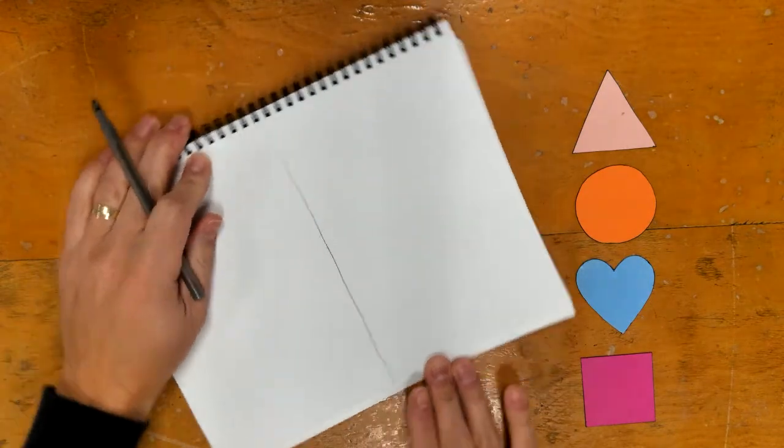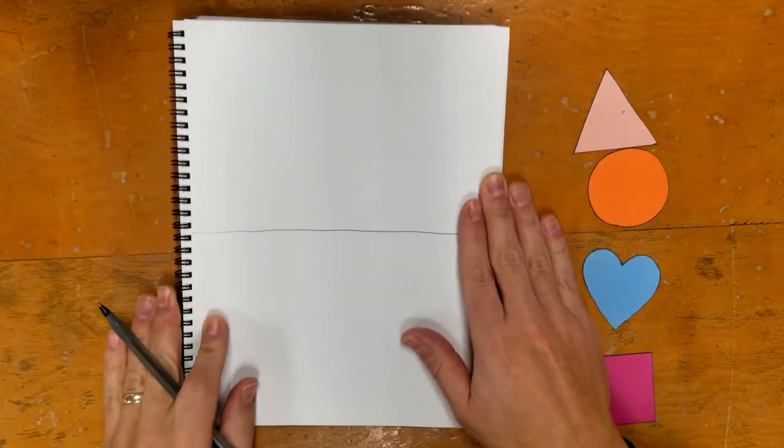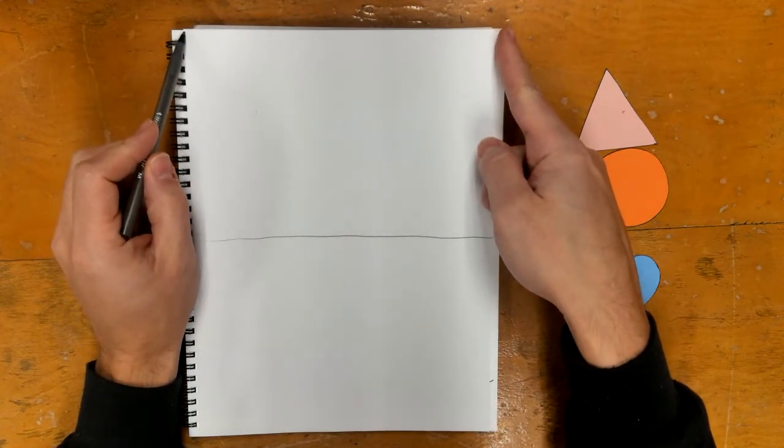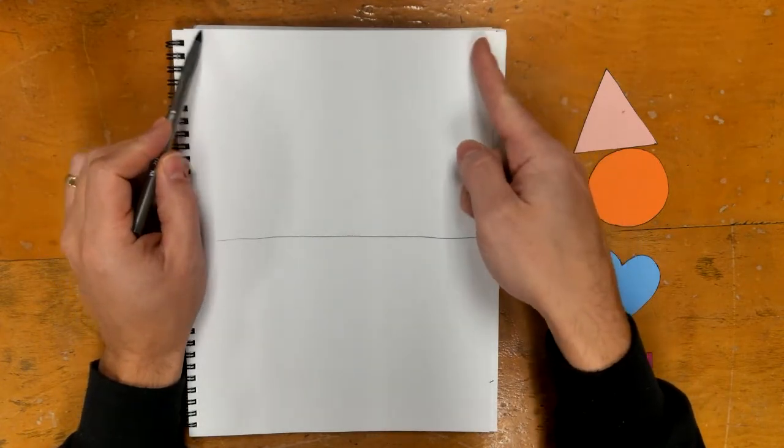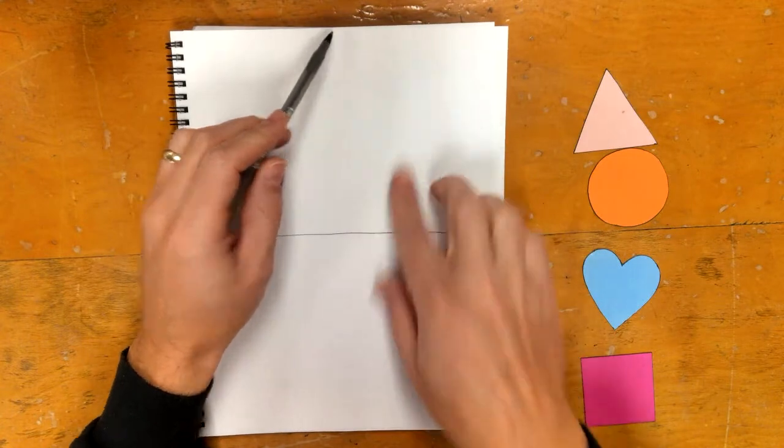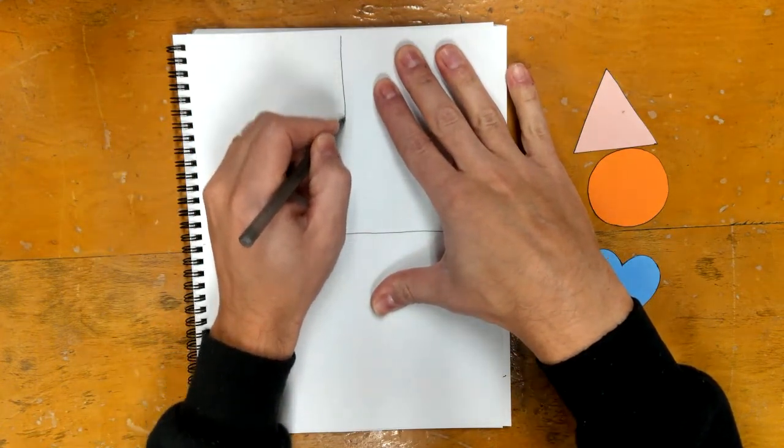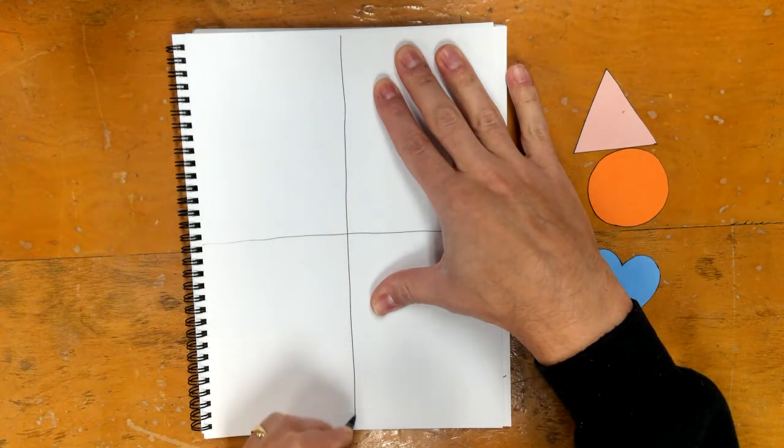Then I'm going to take my paper and I'm going to turn it this way. And now I'm going to look at the top from this edge to this edge, and I'm going to try to find the center there. And so now I'm going to hold my paper down and I'm going to draw a line that goes this way.